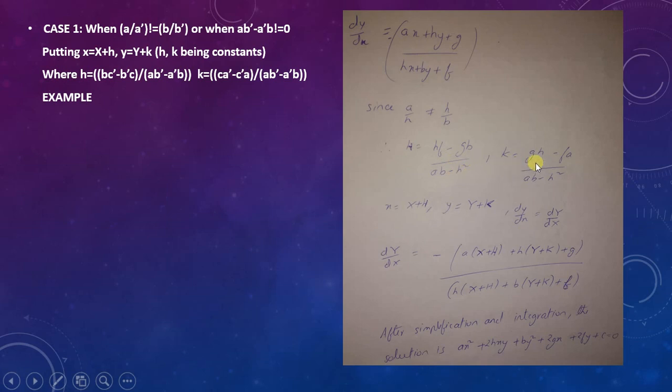K equals (gh - fa) divided by (ab - h²). Now x = X + H and y = Y + K.